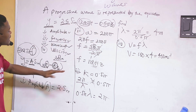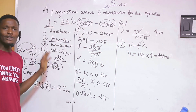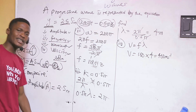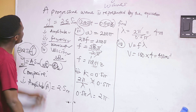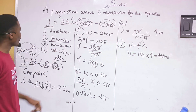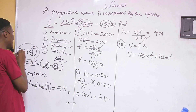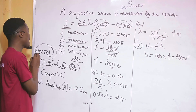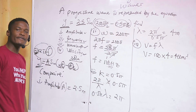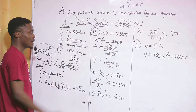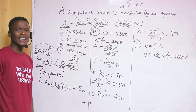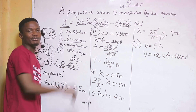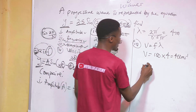Remember that in JAMB, these questions come one at a time — they won't ask for all of them together. So to find velocity, you normally need frequency and wavelength first. If you're asked for frequency, look for ω — ω is whatever is in front of t. If asked for wavelength, it is contained in k, where k equals 2π over λ.